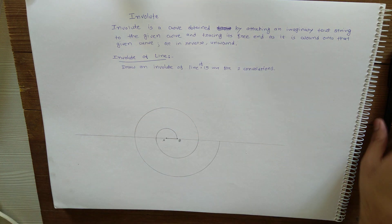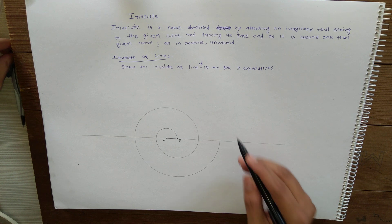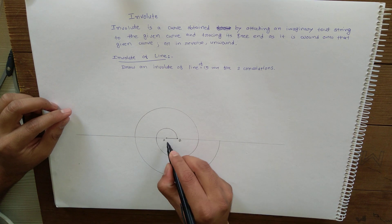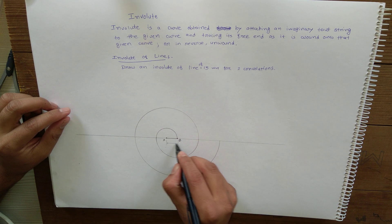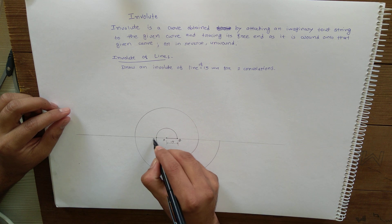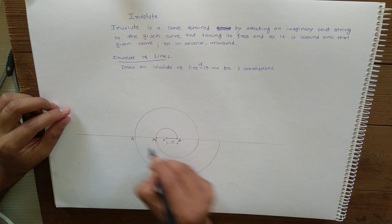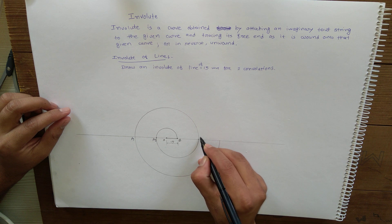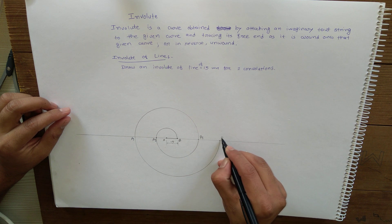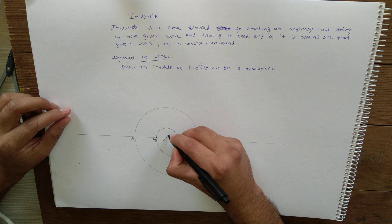So that's all about the involute of line for two convolutions of line length 15 mm. You can name this as A1, A2, this is B1, B2, and you can also write...